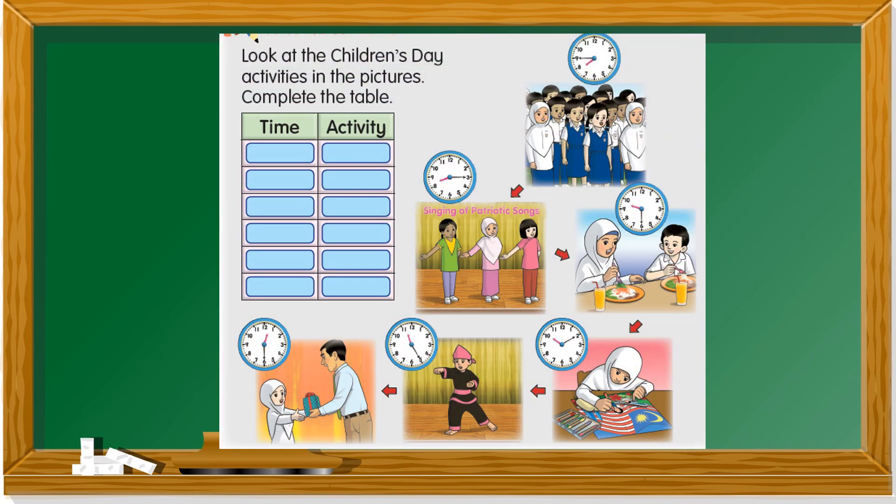Let's take a look at another example. Look at the children's day activities in the pictures and complete the table. How many activities are there? There are six. You need to follow the arrow.